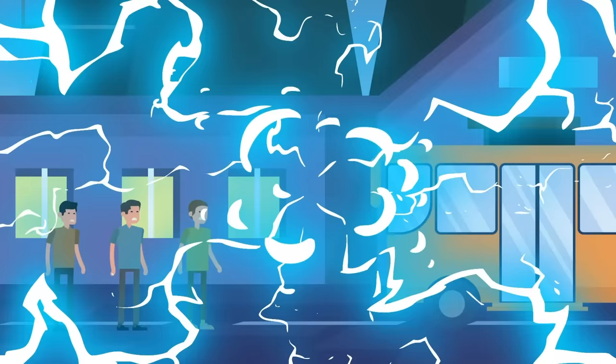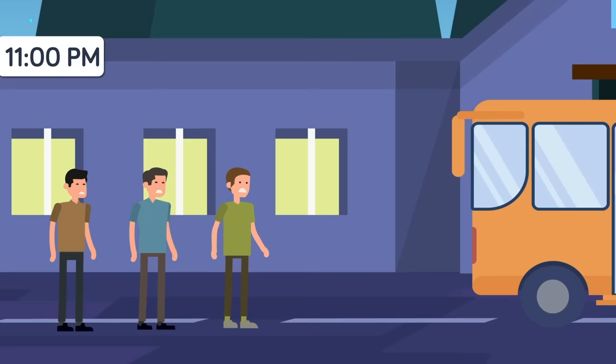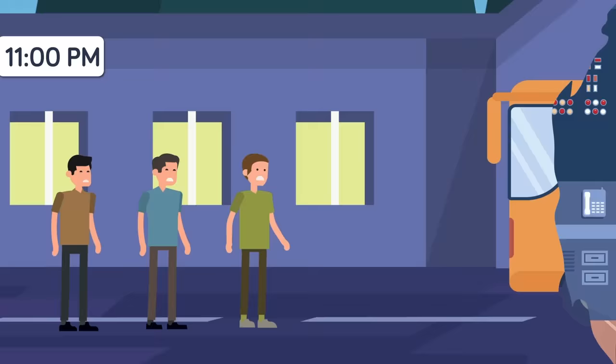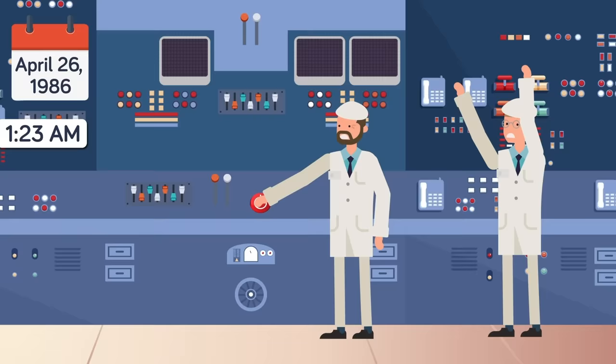There was a change in personnel around 11pm when the night shift took over the test. They were less experienced and never received proper instructions on how to carry out the test safely. On April 26th, 1:23 am, the test officially began. As soon as it started, a sudden power surge occurred. An operator pressed the emergency shutdown button, but the control rods jammed as they entered the core and exploded.